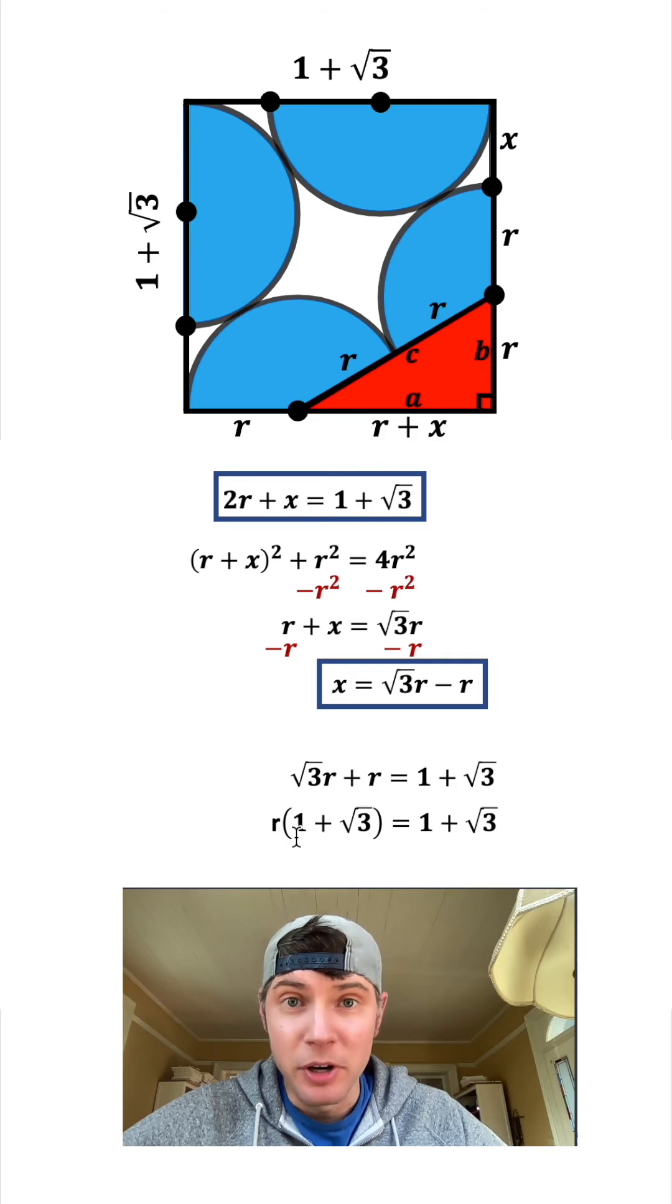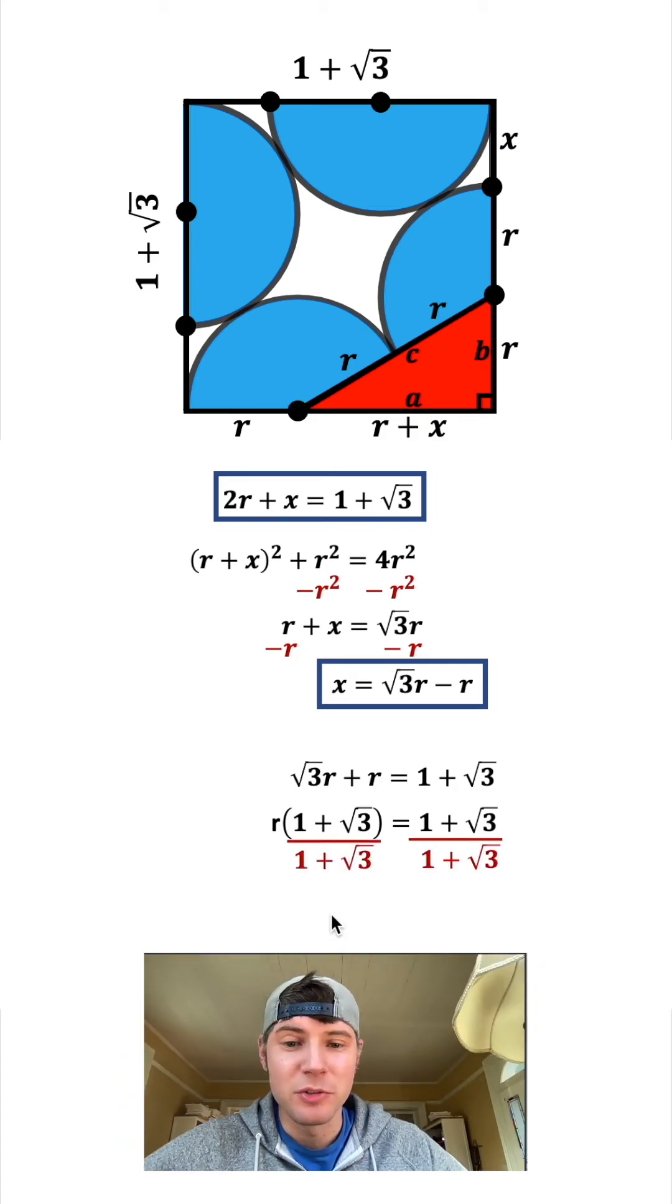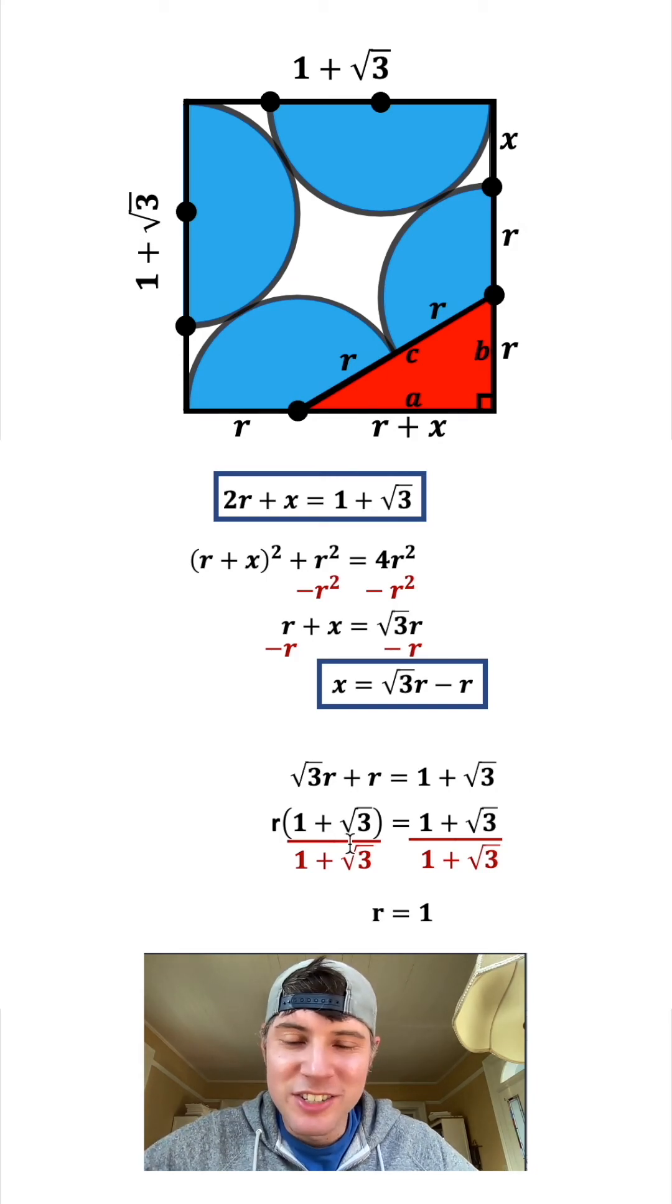We can divide both sides by 1 plus square root 3. On the right side, 1 plus square root 3 divided by 1 plus square root 3 gives us 1. On the left side, these cancel out leaving us with R. Now we know that the radius equals 1.